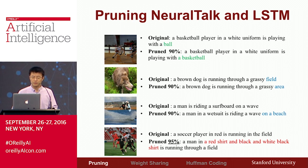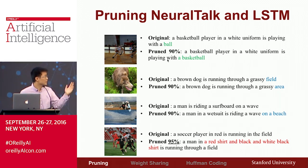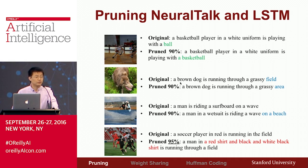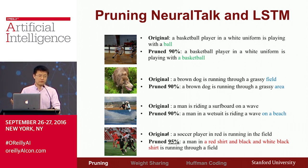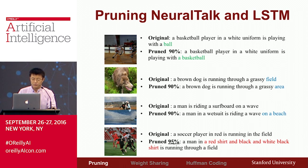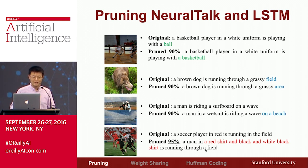Here is an example of pruning NeuralTalk with an LSTM. Given the first image, the original network says 'a basketball player in a white uniform is playing with a ball,' but pruned at 90% it says 'a basketball player in a white uniform is playing with a basketball' — actually more accurate. Similarly, 'a brown dog is running through a grassy field' becomes 'a grassy area.' But if we prune too aggressively at 95%, the network gets confused: 'a soccer player in red is running in the field' becomes 'a man in a red shirt and black shirt is running through a field.' None of us would do well if our brain pruned away 95% of its connections.